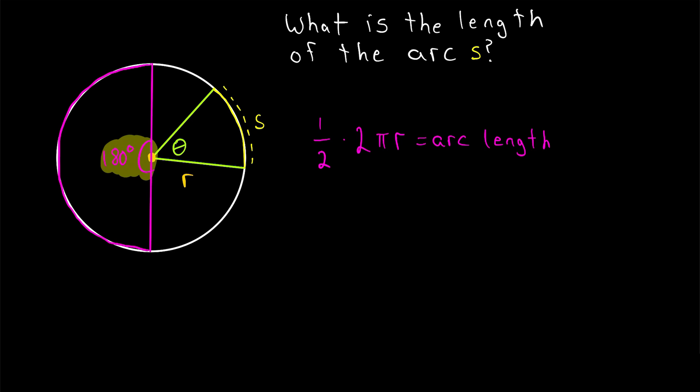If the angle was 60 degrees, for example, that would be one sixth of the circle, one sixth of 360. Thus, it would cut an arc that's one sixth of the circumference. With that reasoning, we can arrive at the general solution to this problem.